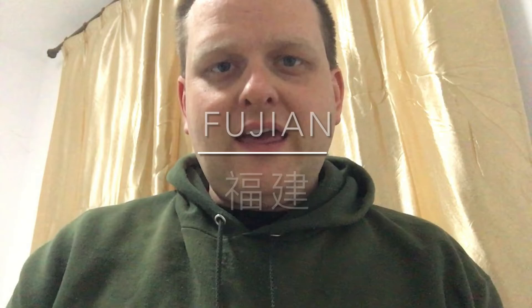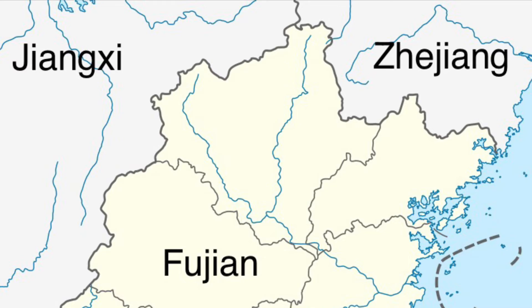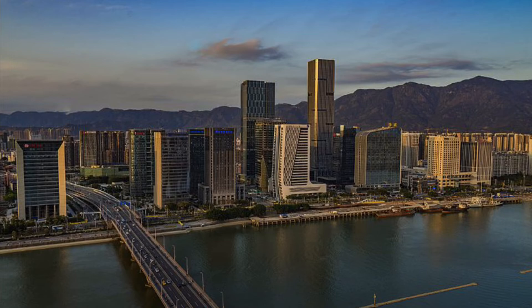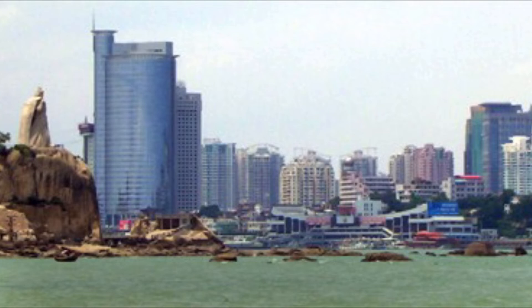Fujian is the first coastal province on our list, as it faces the Taiwan Strait to its southeast. It also has land borders with Guangdong to the south, Jiangxi to the west, and Zhejiang to the north. Its capital is Fuzhou, while its largest city is either Quanzhou — if you count all people living within the municipal borders — or Xiamen, if you only count urban population. One of the things Fujian is best known for is its diaspora; a huge percentage of the overseas Chinese people living in Southeast Asian countries like Indonesia, Malaysia, and Singapore are descended from immigrants from Fujian.